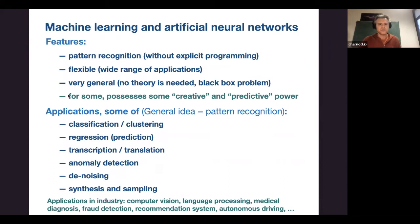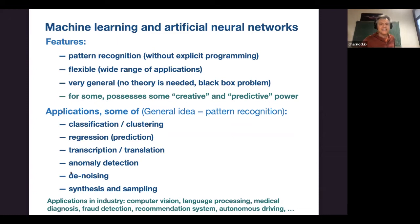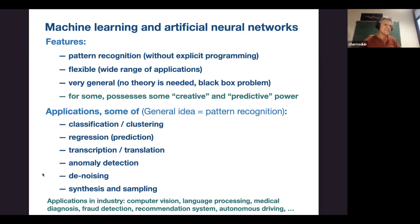Machine learning applies everywhere — it's pattern recognition without explicit programming. It is very flexible and generic, no physical theory is needed, and it can be applied anywhere. At some point it has predictive or even creative power. Applications include classification, regression, prediction, transcription, translation, anomaly detection, denoising, and image synthesis — for example, predicting or generating faces of people. It is everywhere in commerce — in Google Translate, for example.